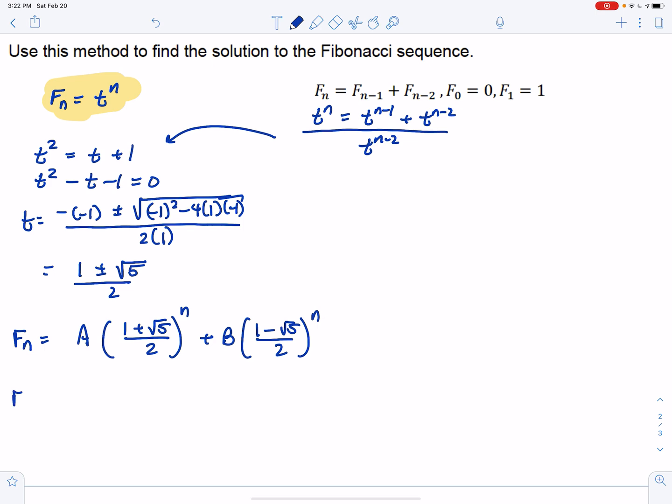So F sub 0 would be A times—now, anything to the 0 is 1, and anything else to the 0 is 1 as well, and we're supposed to get 0 from our initial conditions over here. F0 is 0, F1 is 1.